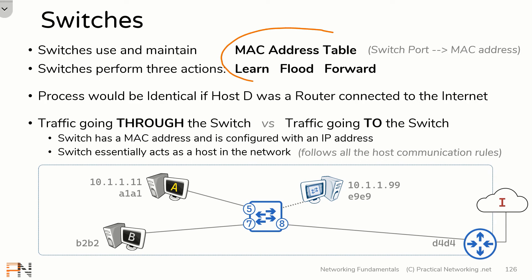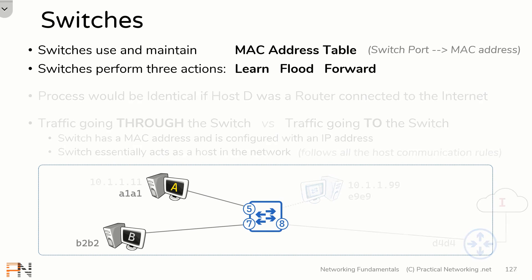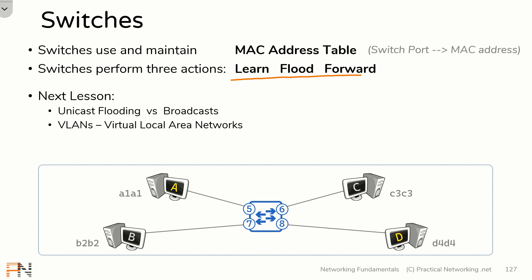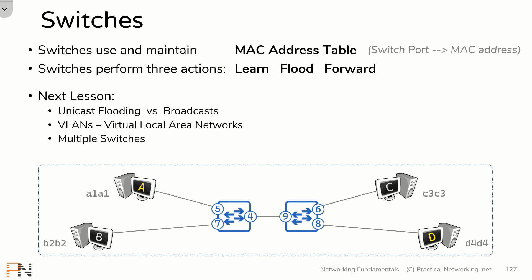The switch is merely going to perform these actions to facilitate communication within the network. That wraps up part one of our lesson on switches. In the next lesson, we're going to unpack three more ideas: we'll describe unicast flooding and explain how it differs from a broadcast; we'll briefly define VLANs and show how these actions change or don't change when VLANs are used; and we'll show how communication flows through multiple switches, demonstrating that these actions remain the same regardless of how many switches data flows through.